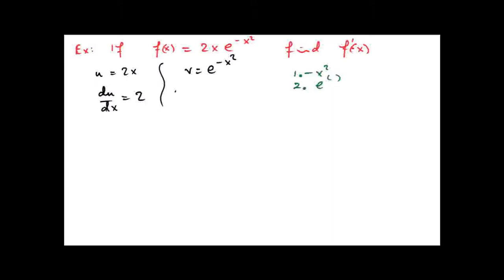So dv dx equals — remember, you differentiate each function one at a time and multiply your two answers together. If I differentiate minus x squared, I get minus 2x. And if I differentiate e, I get e. So that's e to the power of minus x squared. The minus 2x came from differentiating that function, and e to the power of minus x squared came from differentiating that function.